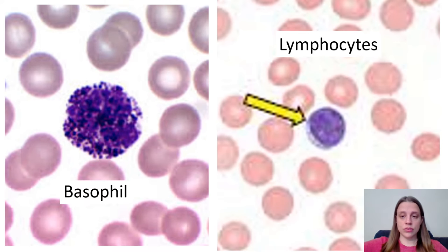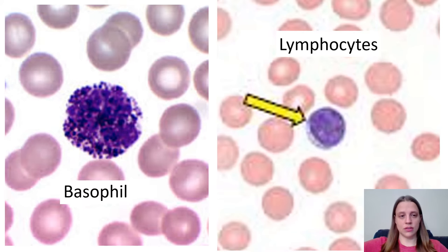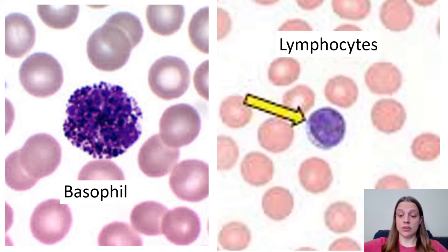Basophils and lymphocytes are commonly confused simply because they're both purple. The basophil, though, usually very clearly has lots of granules. It's also larger — all of the granulocytes are about two to three times the size of a red blood cell, whereas a lymphocyte is usually about the same size as a red blood cell.